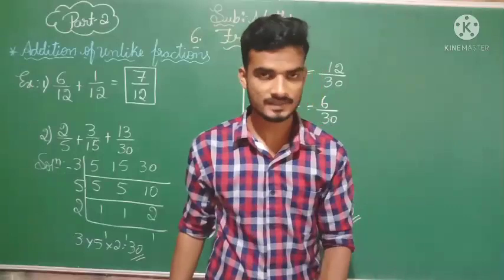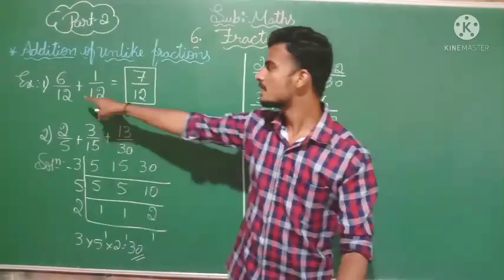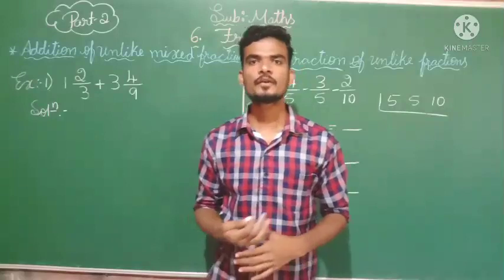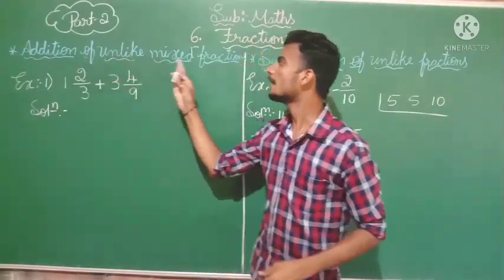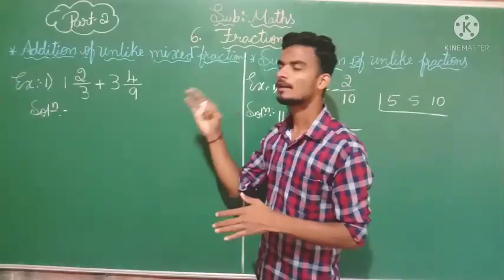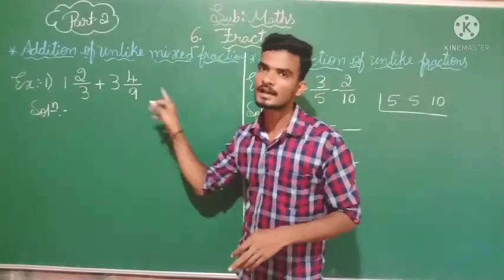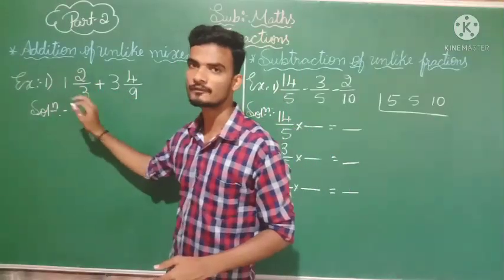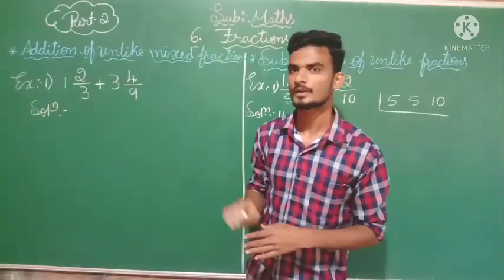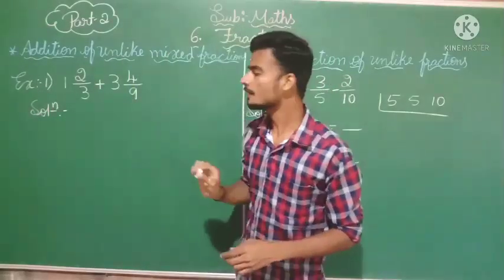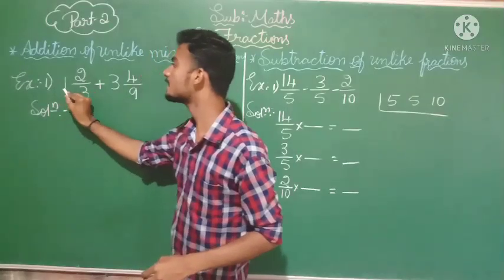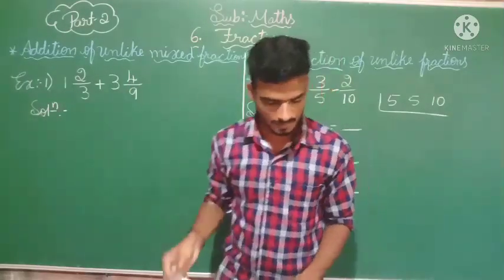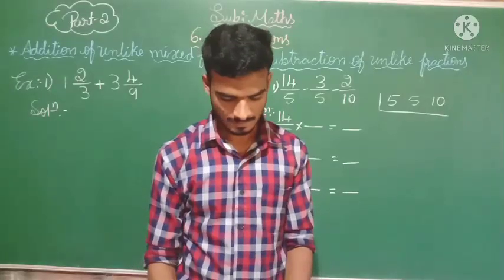These problems are taken from your Exercise 6.2. Now let us see a few examples on addition of unlike mixed fractions. We have seen addition of like fractions. If a mixed fraction arises, first you want to convert the mixed fraction into an improper fraction, then add the numbers.